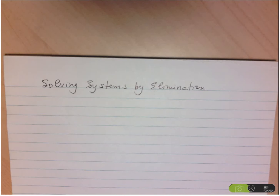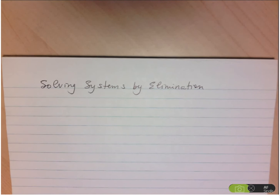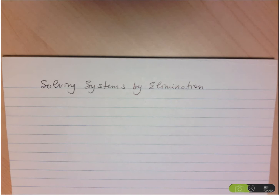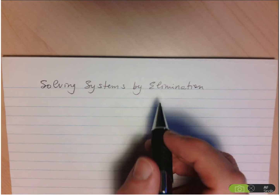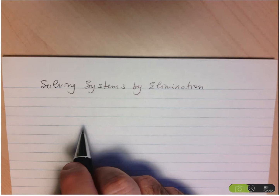Hi folks, today we're going to take a look at an alternative method for solving a system of equations. In the past we've used the substitution method, which worked well as long as one of the variables had a coefficient of 1 or negative 1, which made it easy to isolate. However, when none of the variables had a coefficient of 1 or negative 1, we risked having to work with fractions, which we'd like to avoid if we can. The method of elimination does the trick for us.